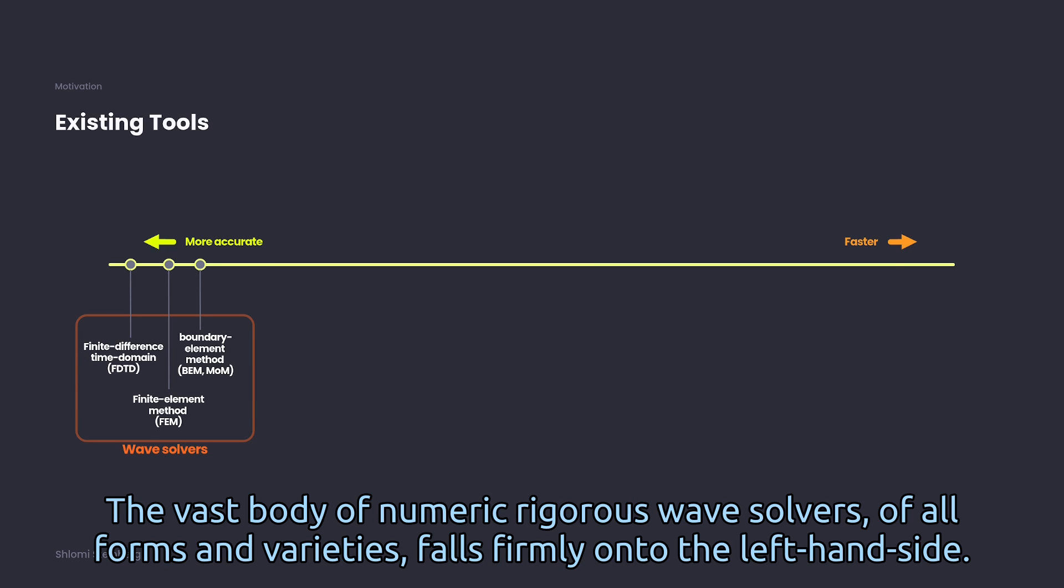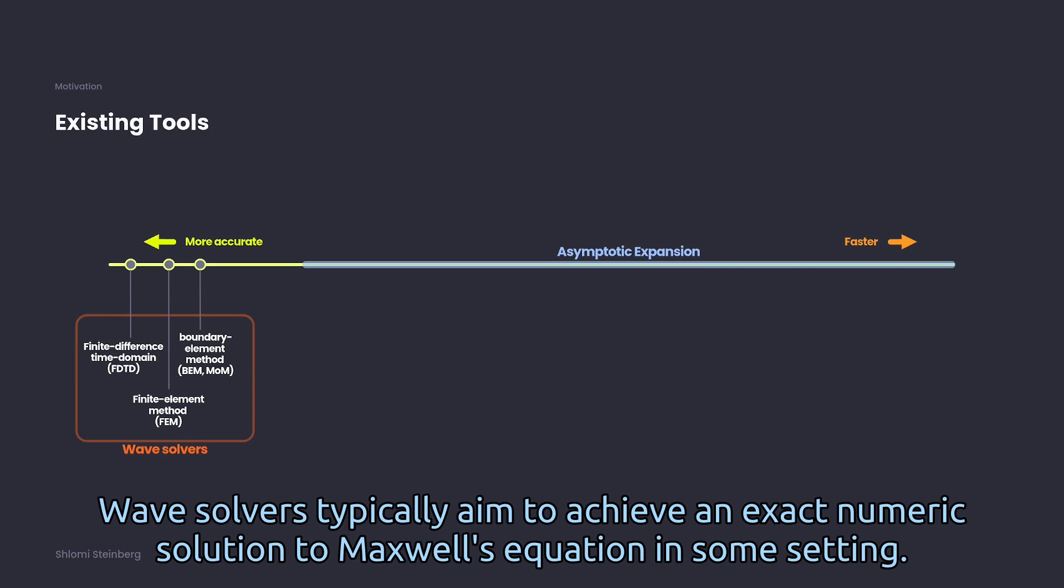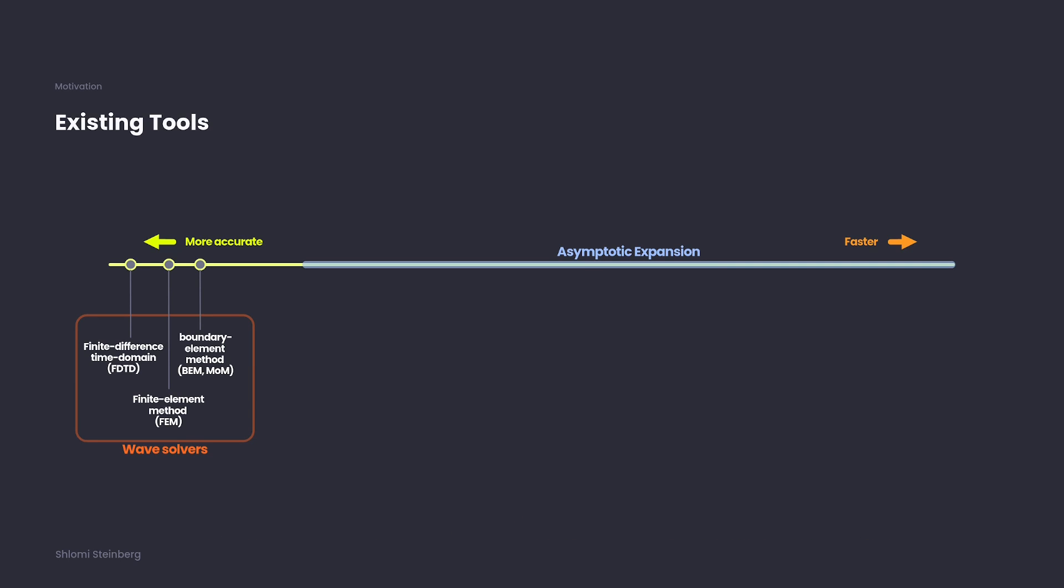The vast body of numeric rigorous wave solvers, of all forms and varieties, falls firmly onto the left-hand side. Wave solvers typically aim to achieve an exact numeric solution to Maxwell's equation in some setting.